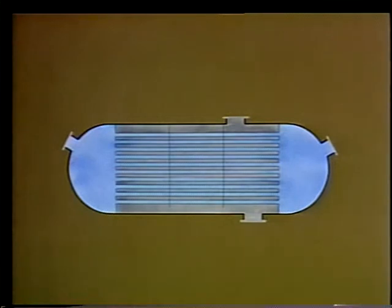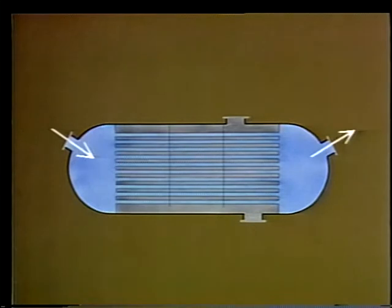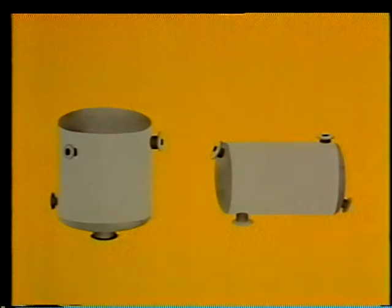In an earlier part of this program where we talked about the three basic categories of heat exchangers, we looked briefly at how a shell and tube exchanger works. Let's look a little more closely at a typical shell and tube heat exchanger. Just like condensers, in shell and tube exchangers, the two fluids passing through do not come in contact with each other. One of them will be going through the shell of the unit while the other will be flowing through the tubes.